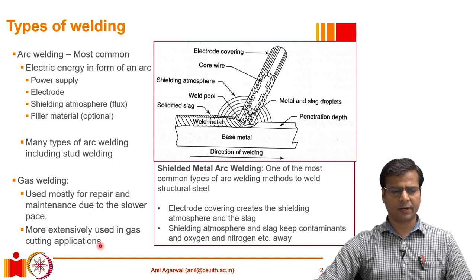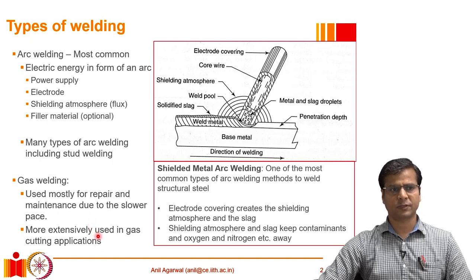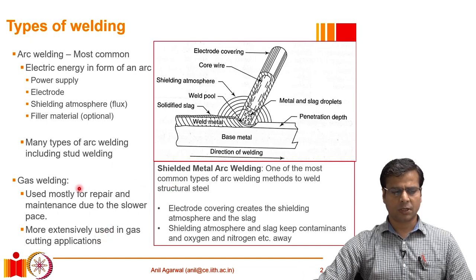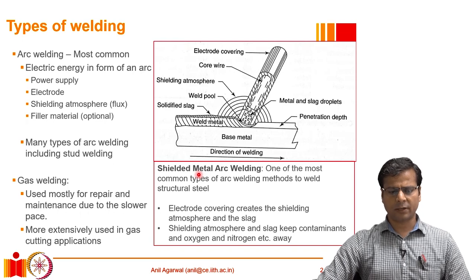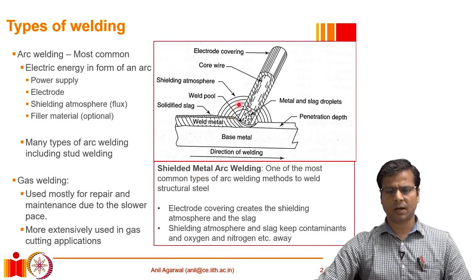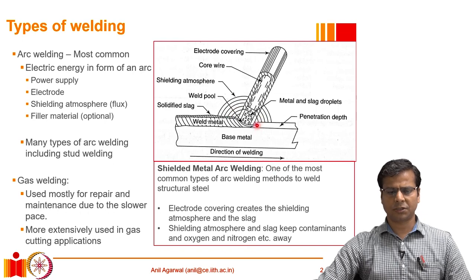Gas welding is used more significantly for cutting operations — when you want to cut very thick plates of steel, gas torches are very effective. We will not focus much on gas welding; we are primarily going to talk about arc welding. Most arc welding relies on some kind of shielded metal arc welding. The shielding refers to an inert gas atmosphere created around the weld zone, which prevents oxidation and nitrogen from reacting with the molten metal.